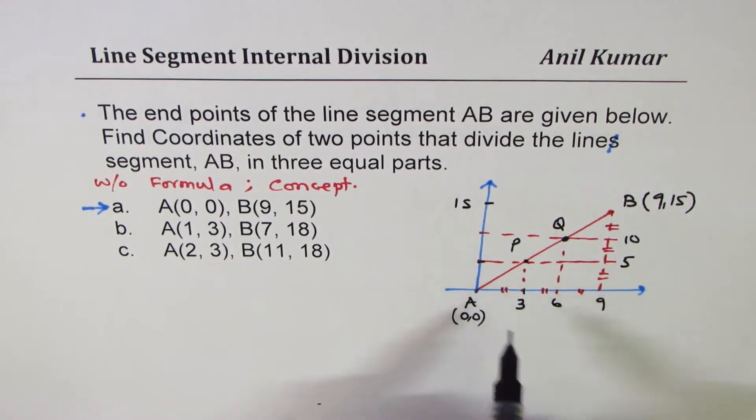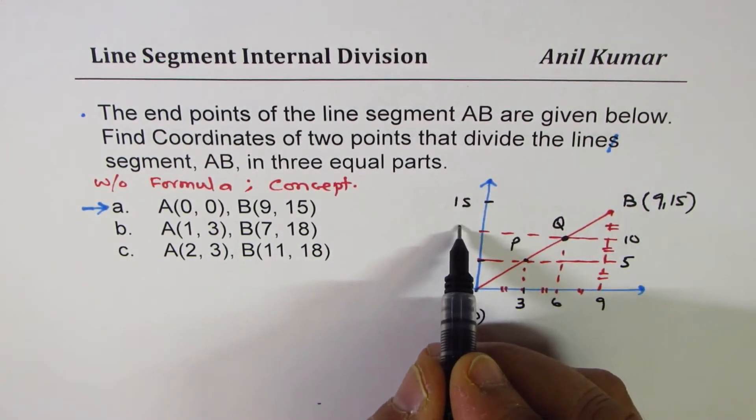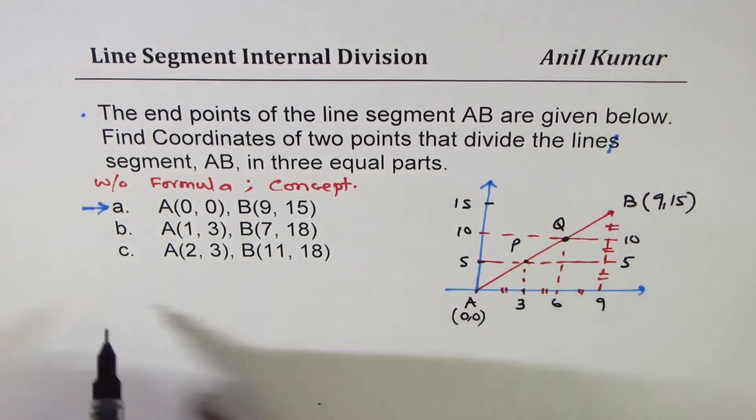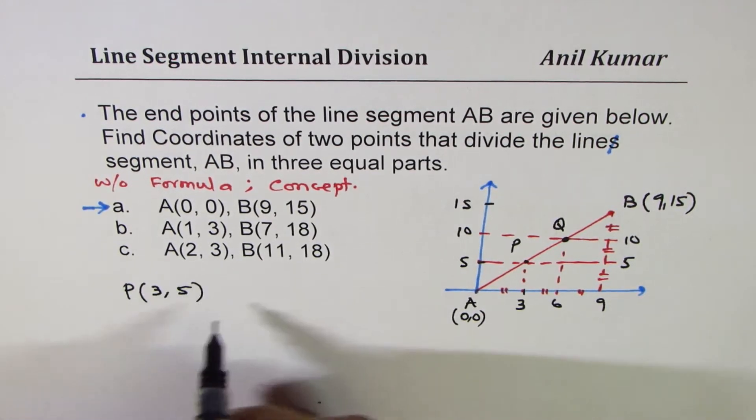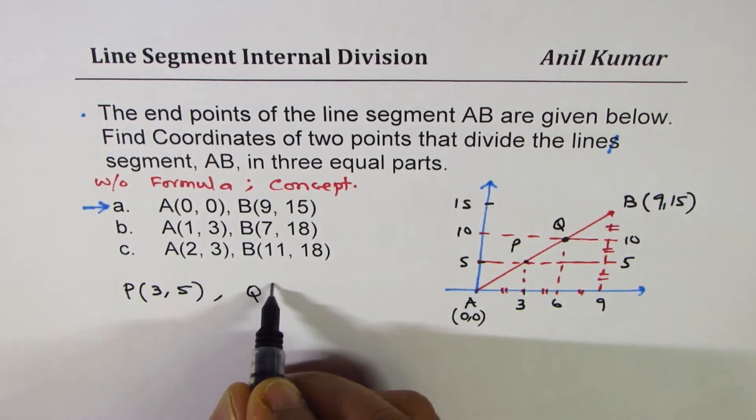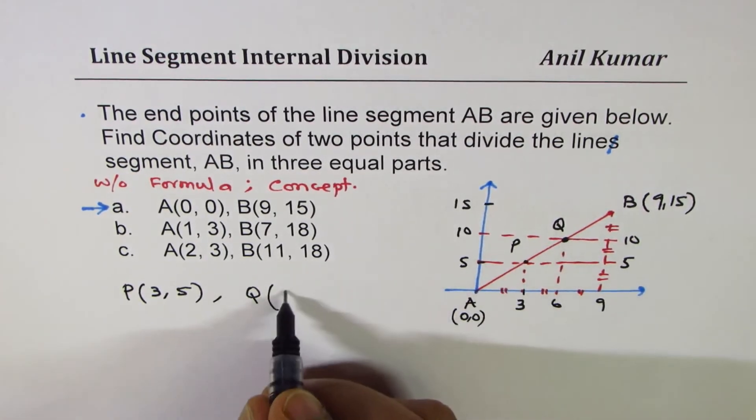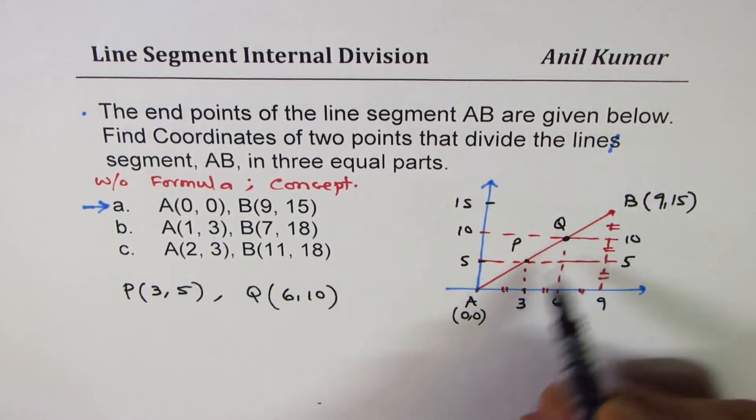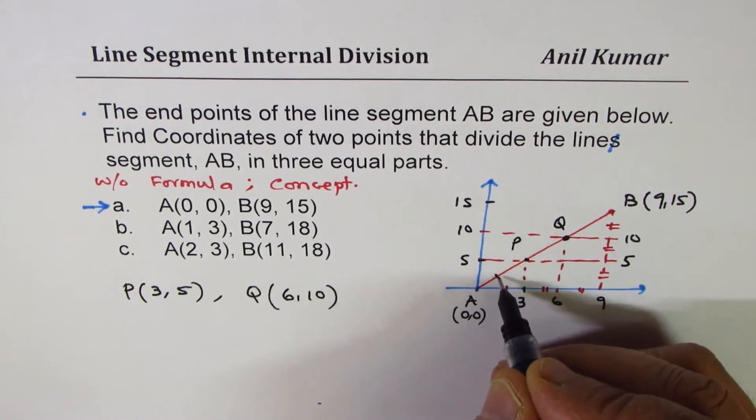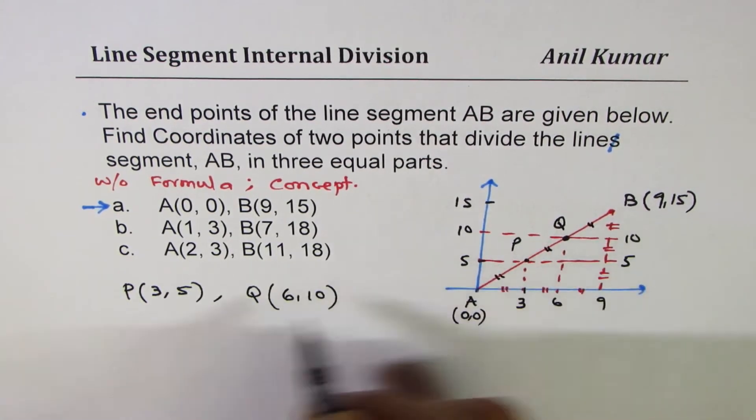That gives you the coordinate points of P, Q and R. So, we have point P as 3, 5. Point Q as 6 and 10 as our answer. Does it make sense to you? That is how we are going to do it. We get now points P and Q, which will divide the segment AB into 3 equal parts. That becomes our answer.